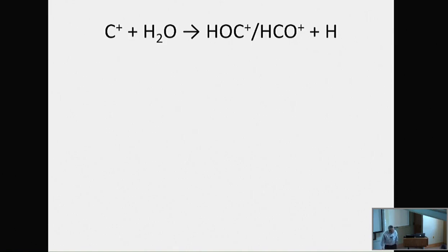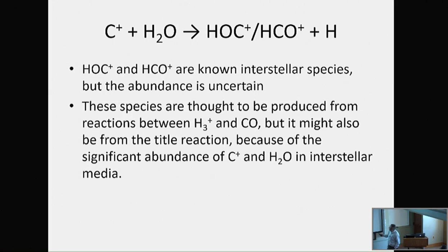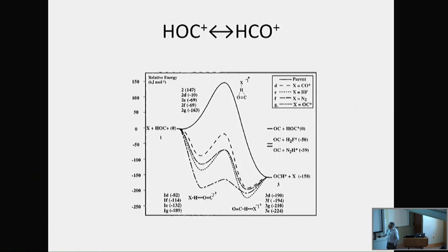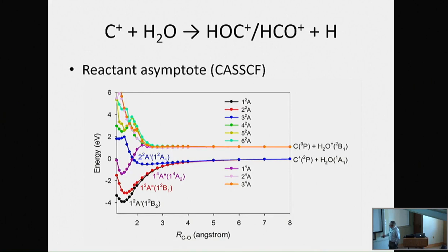Let me talk about the third reaction. Carbon+ plus water is very interesting because it produces two species — HOC+ and HCO+ — that have the same mass-to-charge ratio, so it's very difficult to measure directly. For those in astrochemistry, this is a very important reaction. These two species are both measured, but it's very difficult to actually measure the branching ratio. The C+ + H2O reaction is one, and H3+ + CO is another. Looking at the potential energy surface for HOC+ and HCO+, the energy is different but there's a huge barrier between them. You can see there's no barrier for C+ coming in, but you enter a complicated situation with the product side.